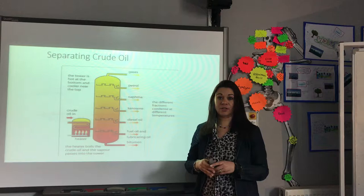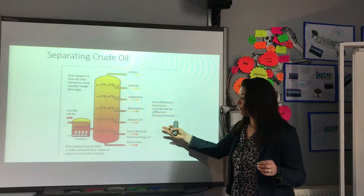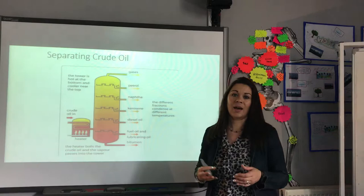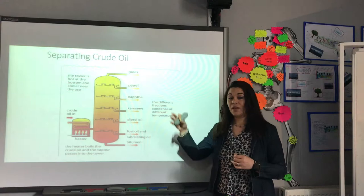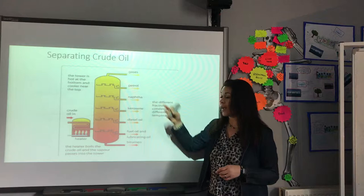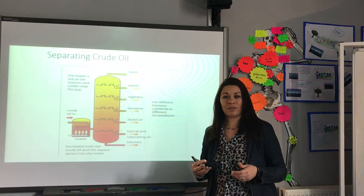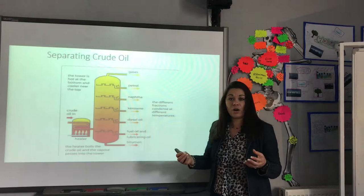Looking at the different uses of the different fractions: bitumen is used for road surfaces and is a long chain hydrocarbon. Fuel oil is used for ships. Diesel oil is used for cars, vans and lorries. Kerosene is used for aircraft fuel. Naphtha is used in cleaning products and chemical production. Petrol is used for cars and vans. And at the top we have gases such as methane, which has domestic uses such as heating and cooking.